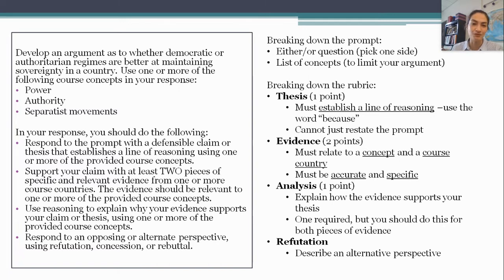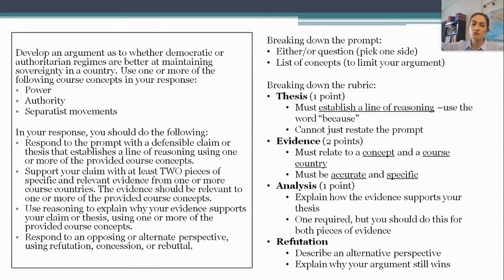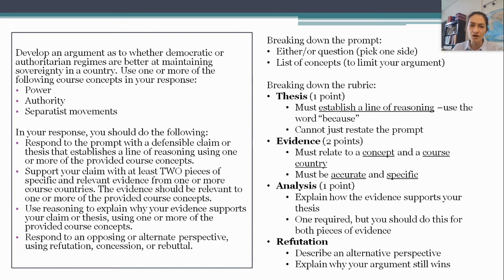They do exist — reasonable people who disagree with you. Then you have to respond to that perspective in some way. The easiest, most foolproof way is to describe what a reasonable person who disagrees would say, and then come back and explain why your argument still beats theirs. However, there is a possibility of what the AP folks call concession — acknowledging that someone could disagree with you, and to some extent they're right. My recommendation is that it's usually safer to earn this point by refuting the alternative perspective, because it requires you to do more work, and in this case that's a good thing.